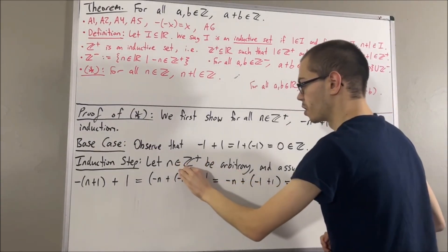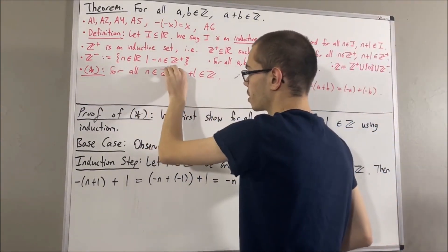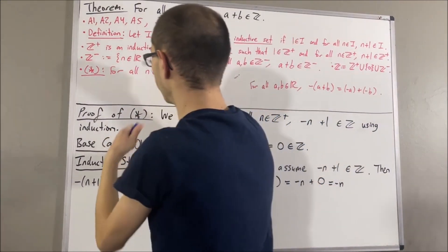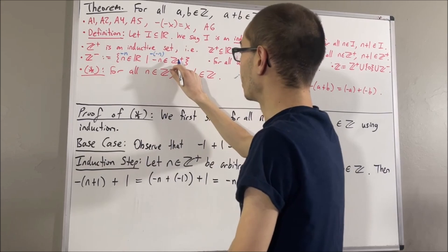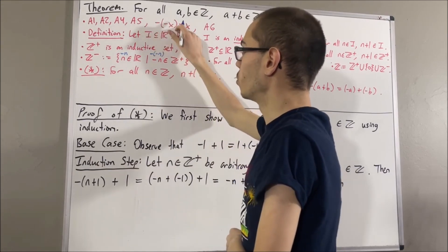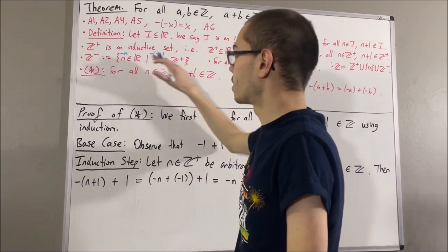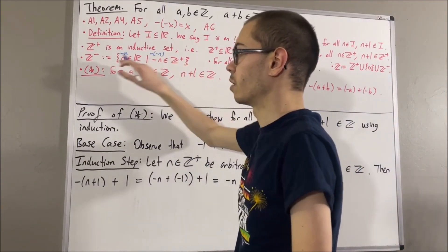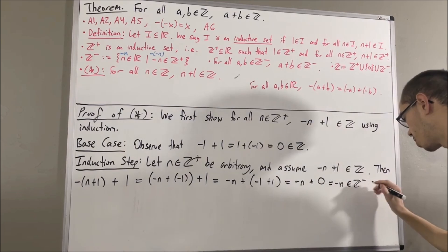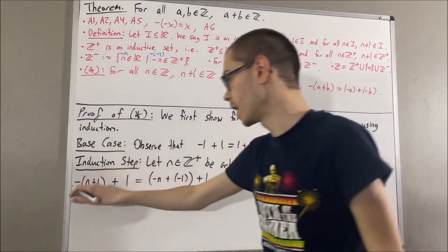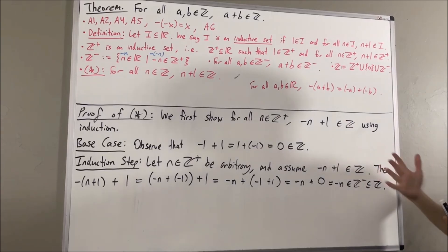By axiom 4, negative n plus 0 is negative n. Now n is a positive integer, and the claim is negative n is a negative integer. According to the definition of the negative integers, we need negative of negative n to be a positive integer. We know that the negative of negative n is equal to n. Since n is a positive integer, negative of negative n is a positive integer, so this requirement is satisfied. This tells us negative n is a negative integer, and the negative integers is a subset of the integers. So this shows the negative of n plus 1, plus 1, is an integer. This completes the induction step.